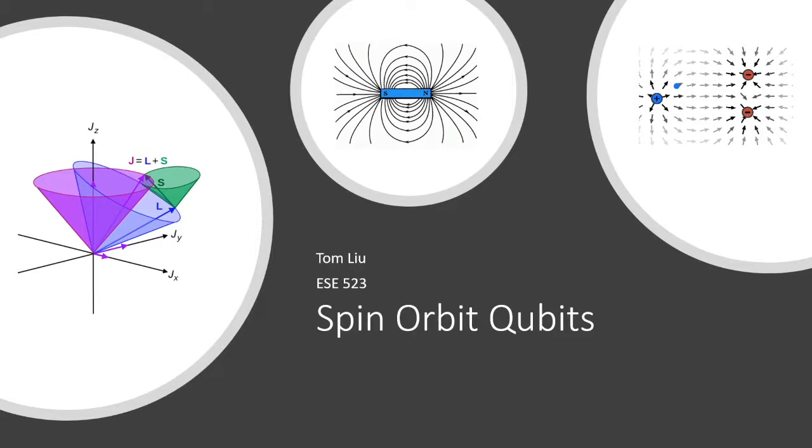Spin-orbit qubits, at their most basic level of understanding, are simply electrons. The spin of these electrons can be either spin up or spin down. As we know, usually we use oscillating magnetic fields to manipulate these spins.